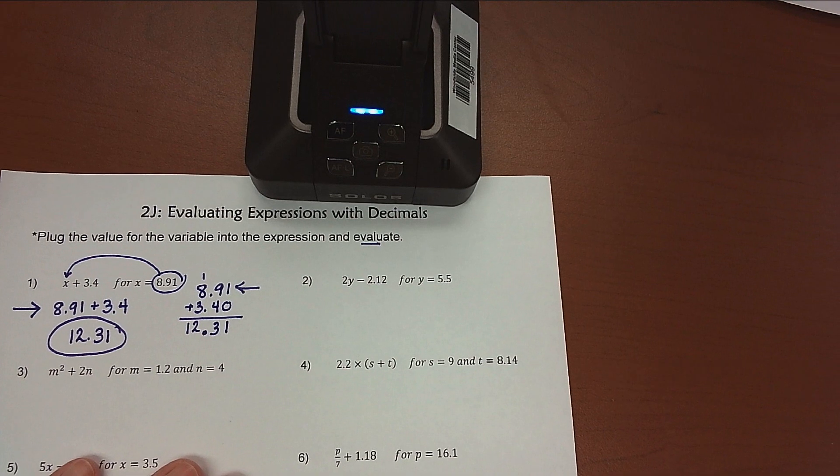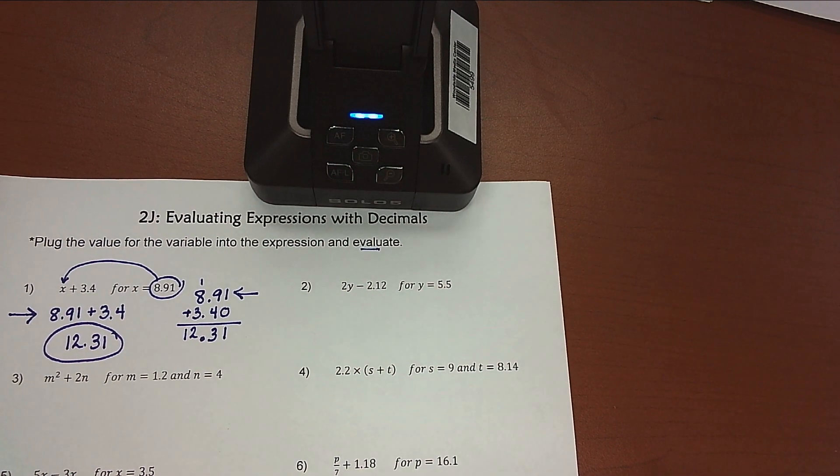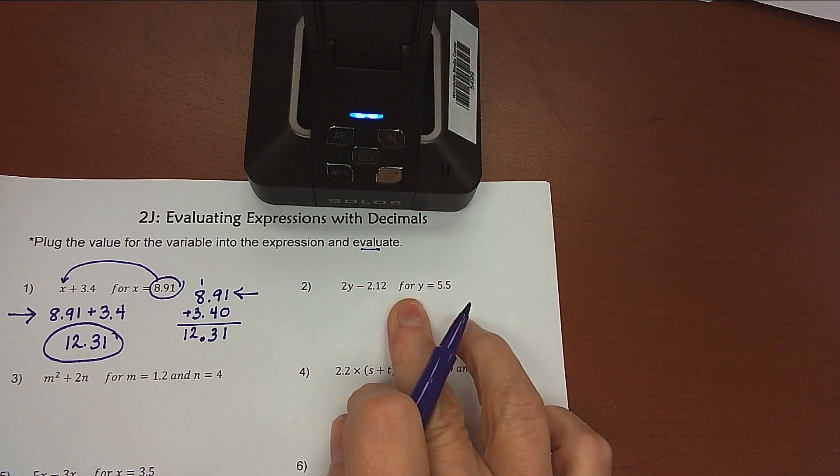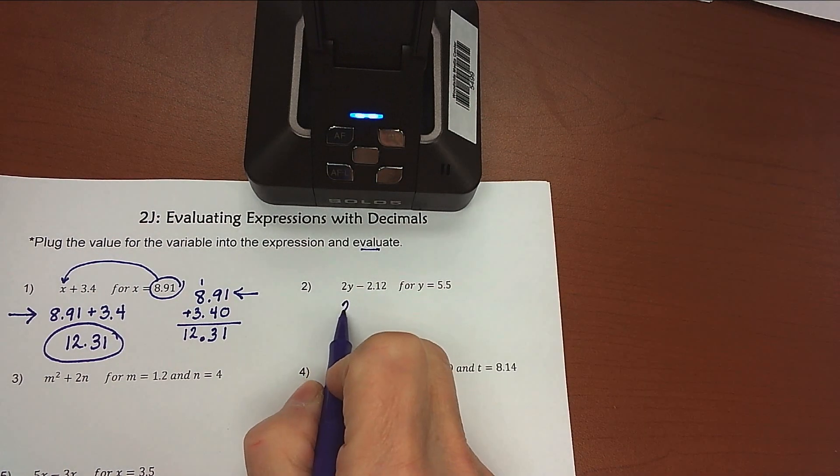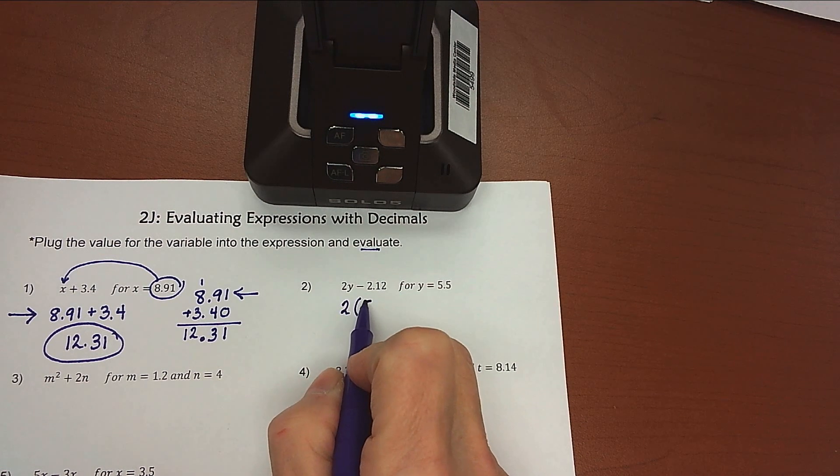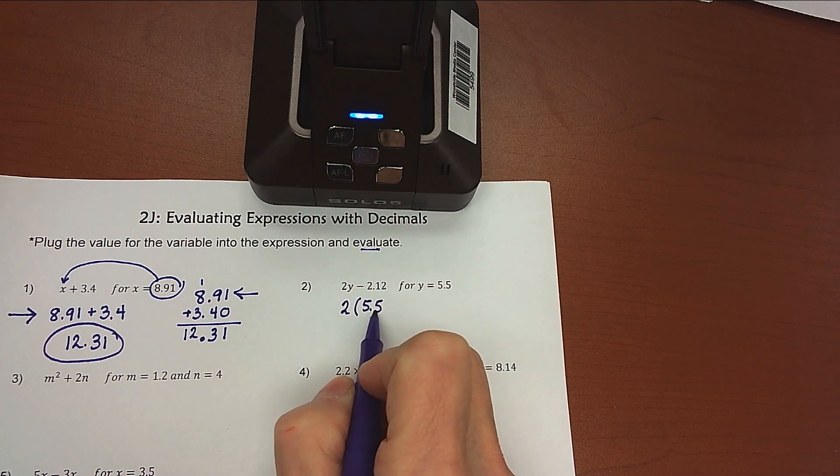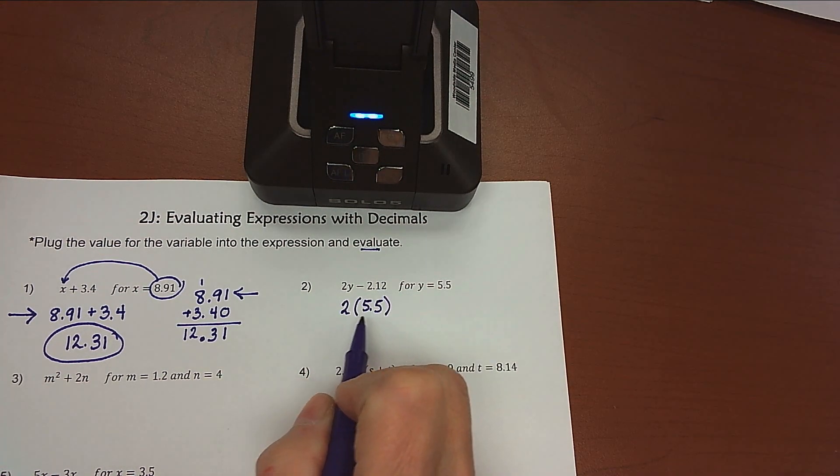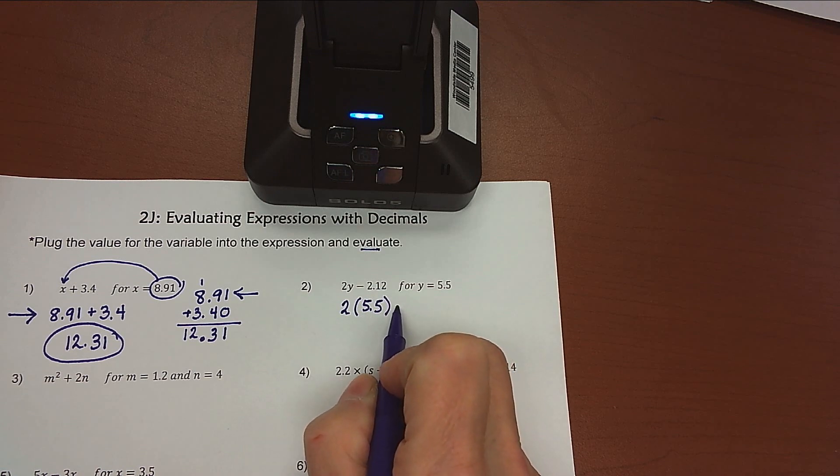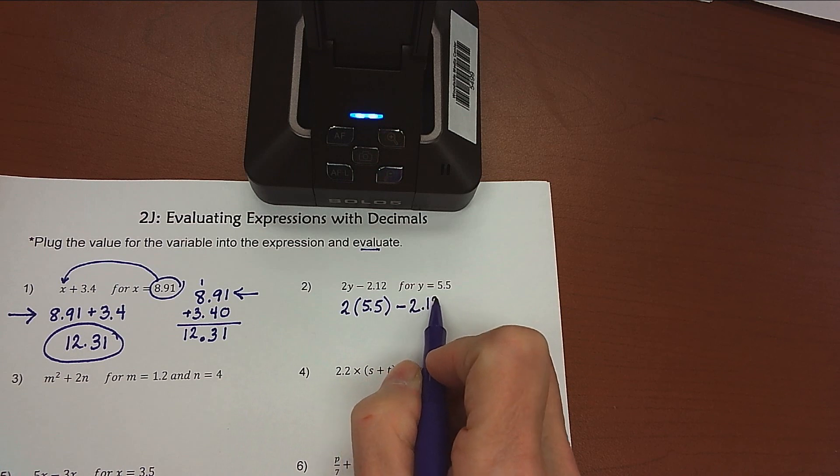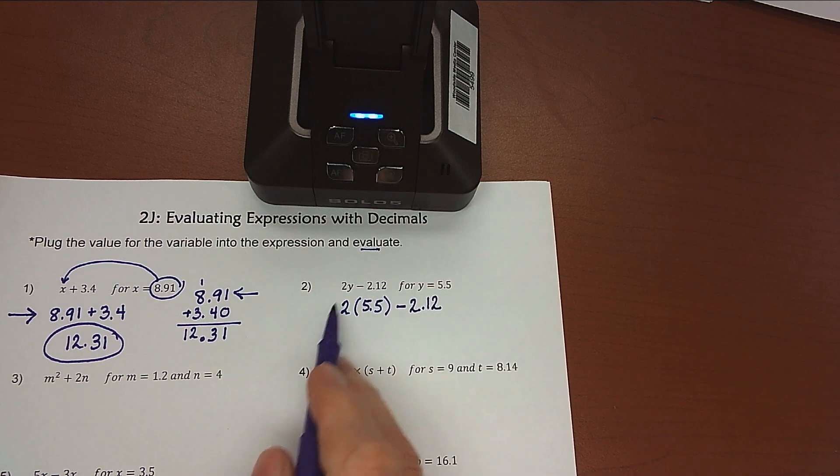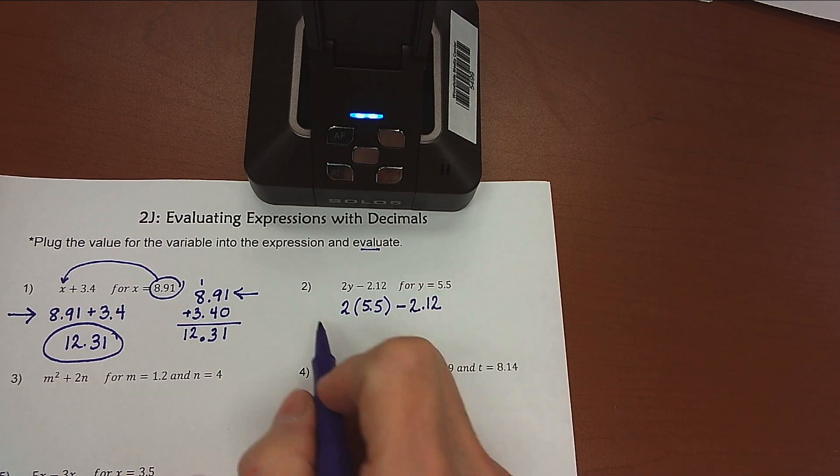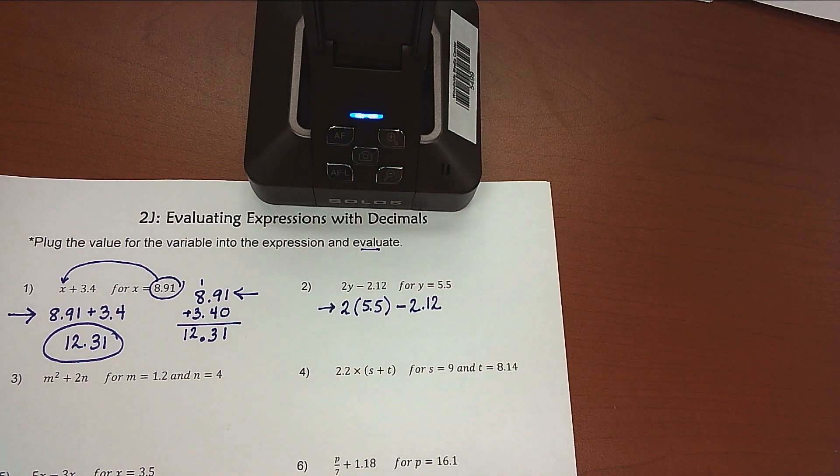All right, so let's look at our second problem here. 2 times y minus 2.12, and this time we want to replace y with 5.5. So I'm going to write my multiplication like this. I'm going to use parentheses to show that I'm multiplying. So this means 2 times 5.5, and after we do that, we're going to subtract 2.12 from this product. So my first step for one point there,